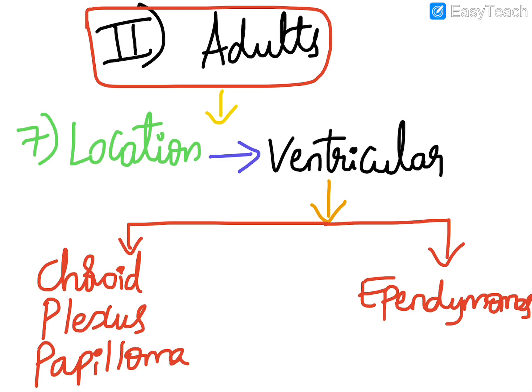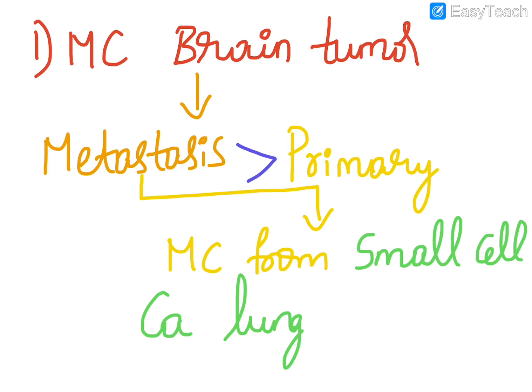From the remaining ventricles, apart from the lateral and fourth ventricle, we see the arising of choroid plexus papilloma and ependymomas.